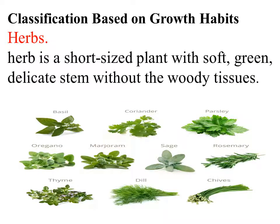In this slide you can see the types of plants. Plants are classified into five groups. The first one is herbs. Herbs are small-sized plants in which the stem is green, soft, and delicate. You can see examples of herbs in this slide.